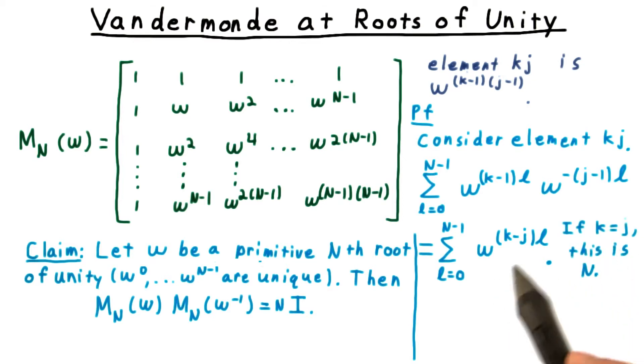Now, if k is equal to j, then every term here is one, and the overall sum is n.